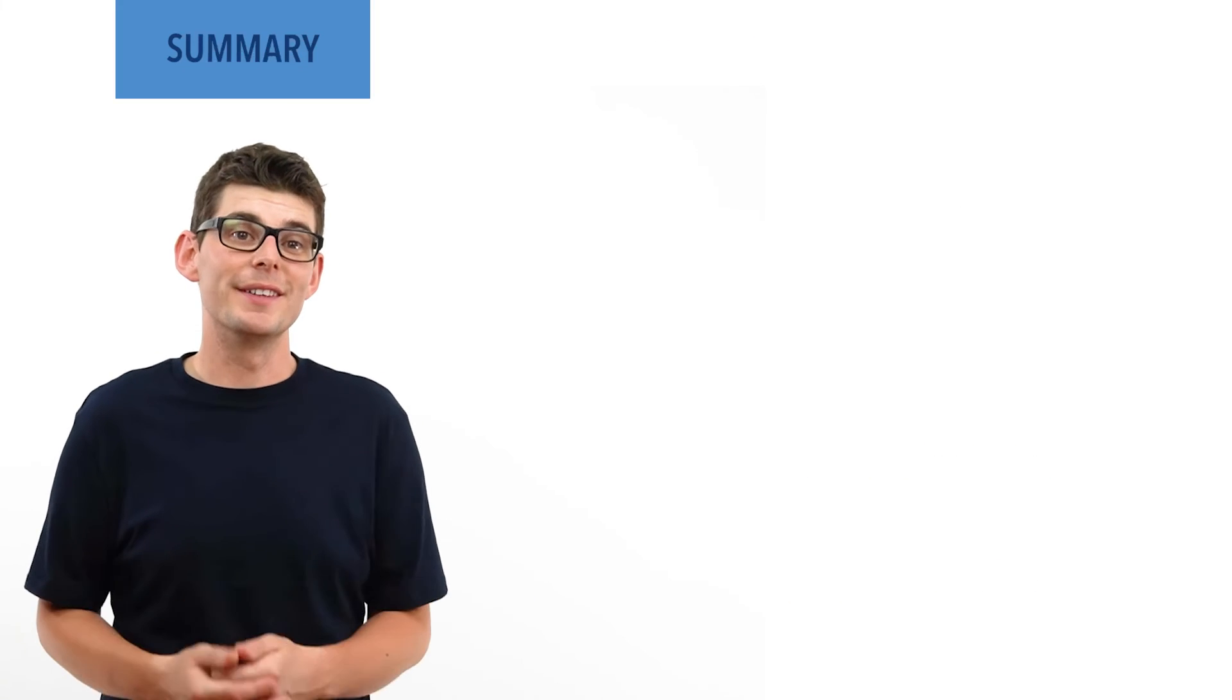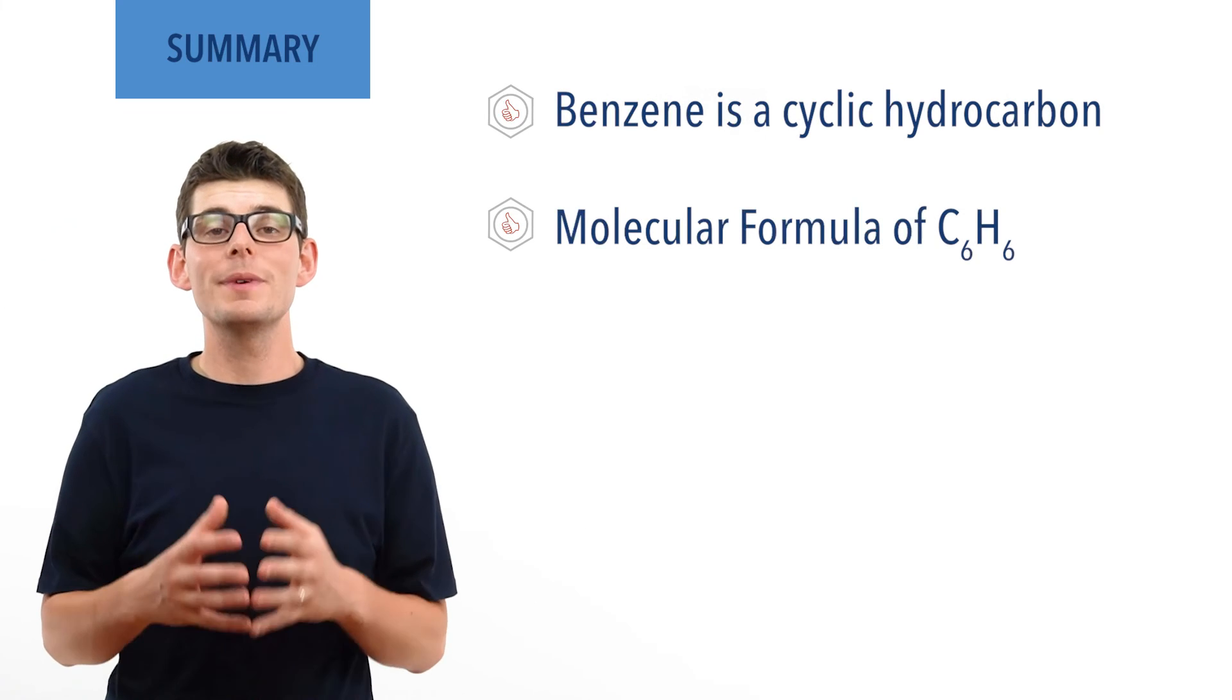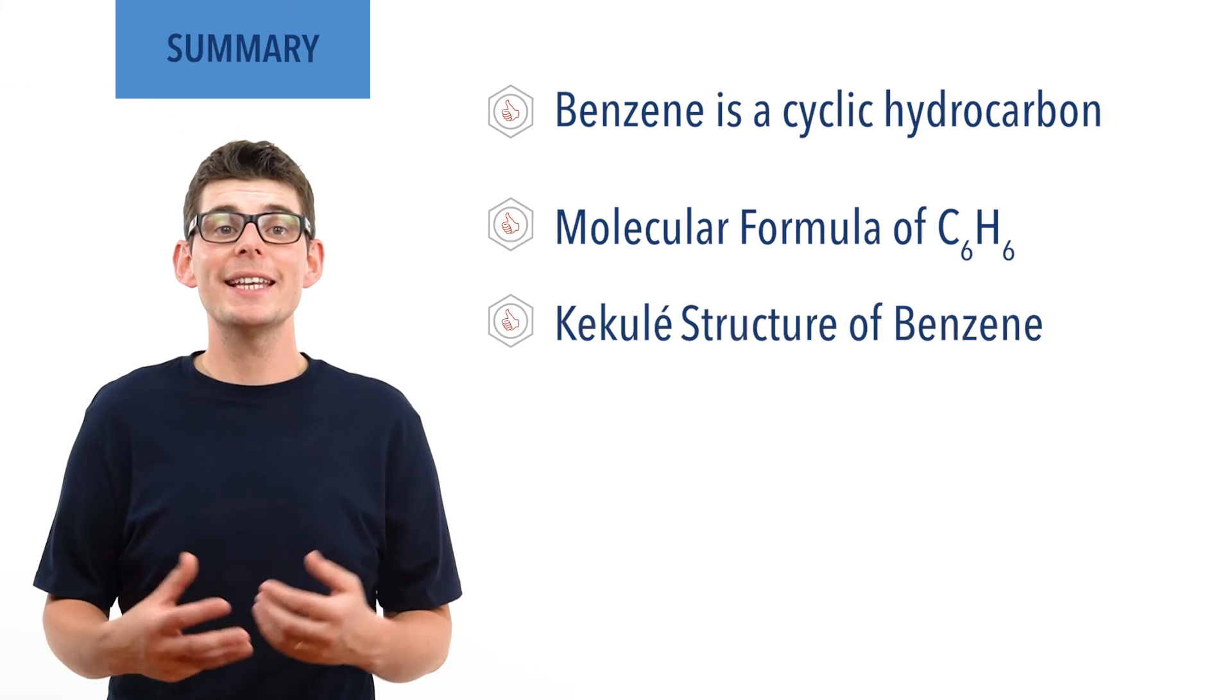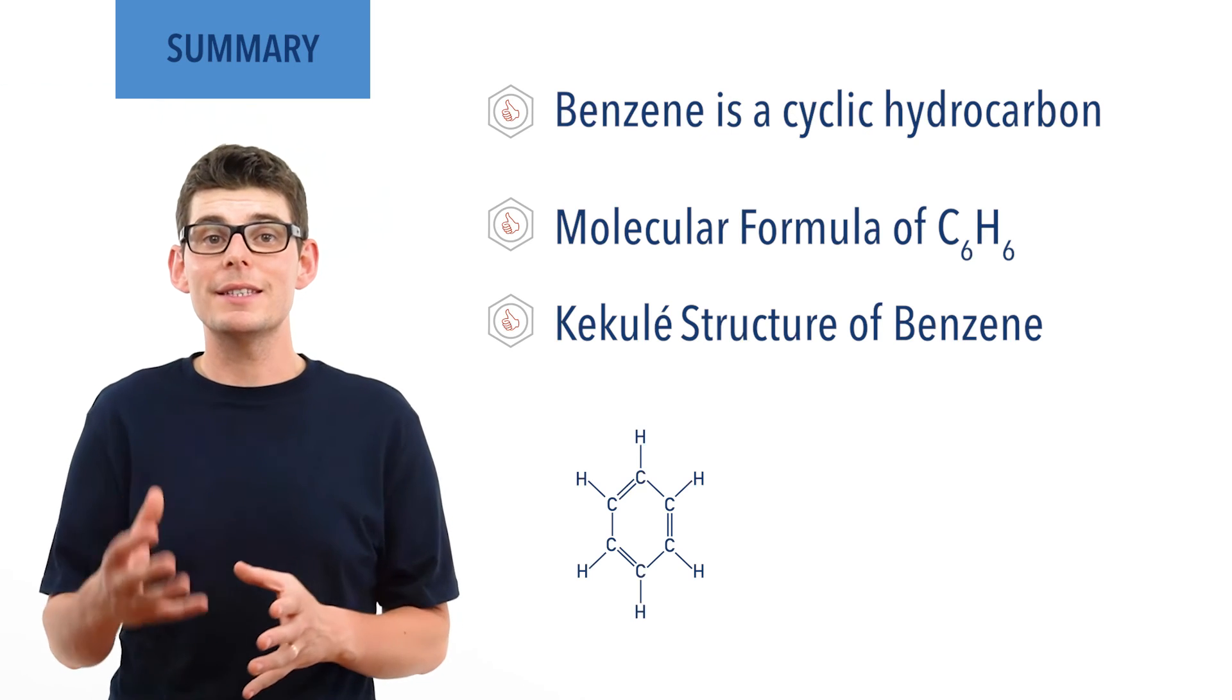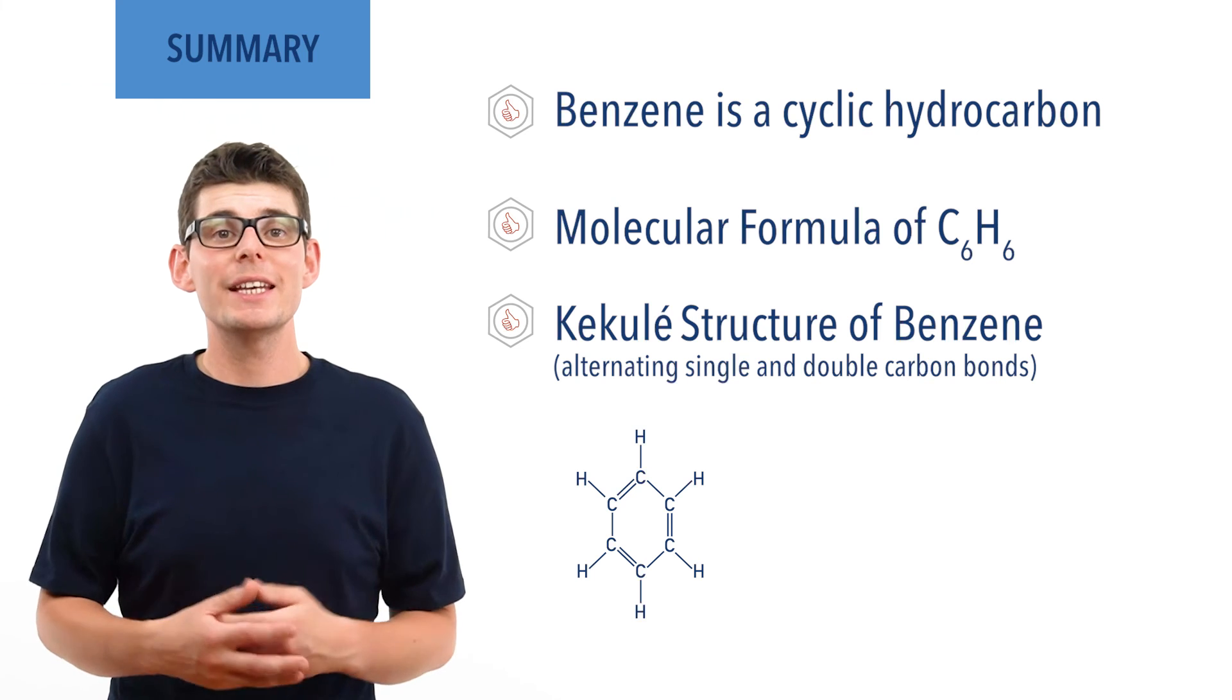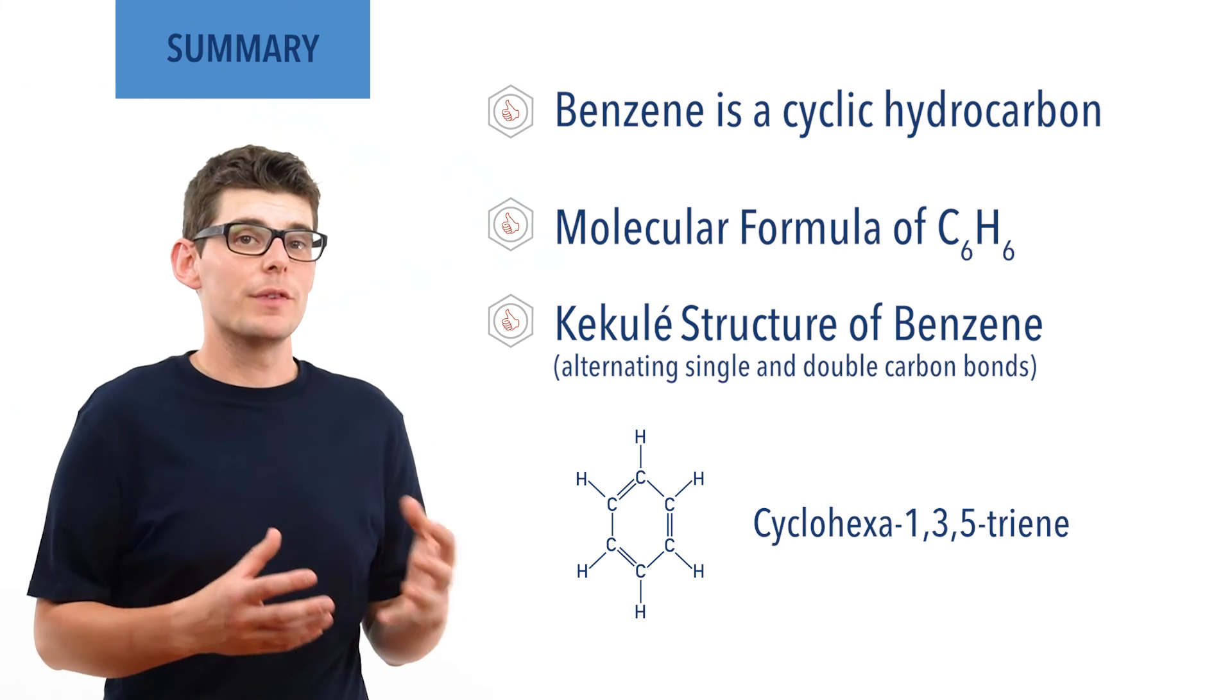So to summarize, benzene is a cyclic hydrocarbon with the molecular formula C6H6. A chemist called Kekulé proposed benzene has a hexagonal structure with alternating single and double carbon bonds. This structure is called the Kekulé structure of benzene and its technical name is cyclohexa-1,3,5-triene.